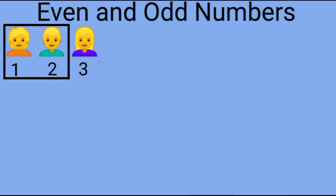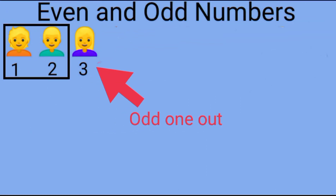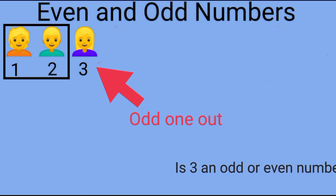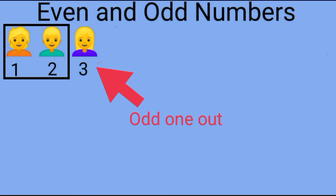Tell me children, what would happen if there were only three students in the class? Have all the students been paired up? Does anyone get left over? Yes, one student does not have a partner for the number three — three is the odd one out in the class. So is three an odd or even number? Yes, three is an odd number.